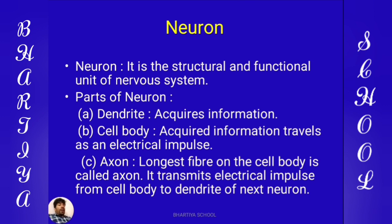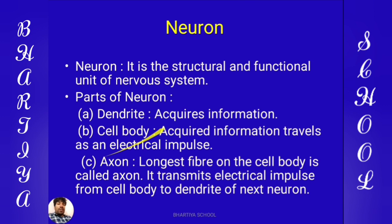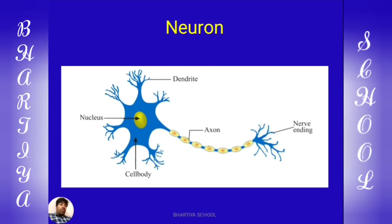Next, we will talk about the neuron parts. Neuron is made by three parts: first part is dendrite, second is cell body, and third is axon.